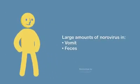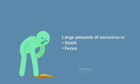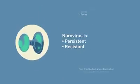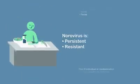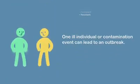In short, because the virus is shed in large amounts in vomit and feces, is persistent, and is resistant, it's clear how a norovirus outbreak can result from one ill individual or contamination event.